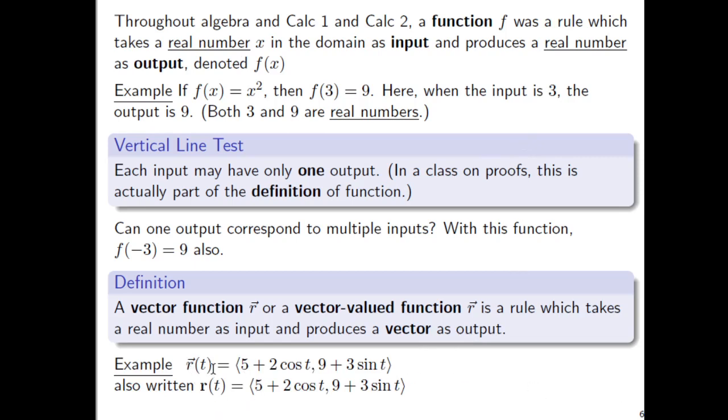So here's an example. r with an arrow above it of t equals, and then this looks like a vector, angle bracket 5 plus 2 cosine of t comma 9 plus 3 sine of t, close angle bracket. And you could write this more in the book's fashion by replacing the r with an arrow above instead with a bold r. So there's our first example of vector function.